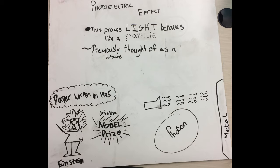So Einstein discovered the photoelectric effect. He wrote a paper about it in 1905 and he was given a Nobel Prize for this, not for anything to do with relativity. The photoelectric effect proves that light behaves like a particle, whereas previous evidence showed that light would behave as a wave. This changed the mindset of scientists.